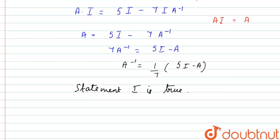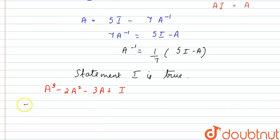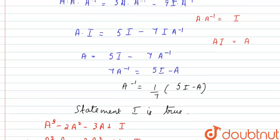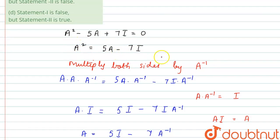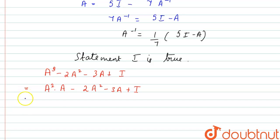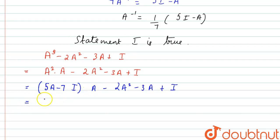Now we move on to the second statement. The expression is A³ minus 2A² minus 3A plus I. We split A³ as A² times A. Substituting A² equals 5A minus 7I from our given equation, this becomes (5A minus 7I) times A minus 2A² minus 3A plus I, which expands to 5A² minus 7A minus 2A² minus 3A plus I.